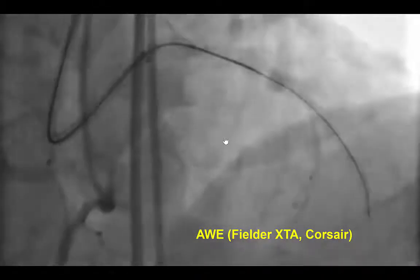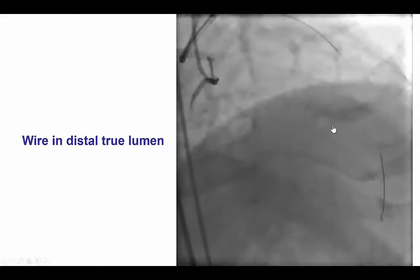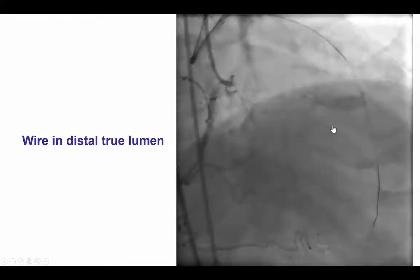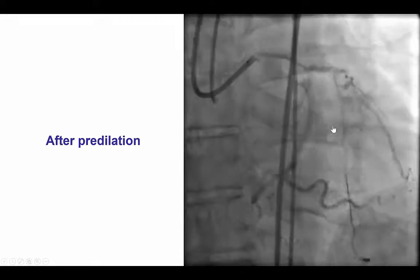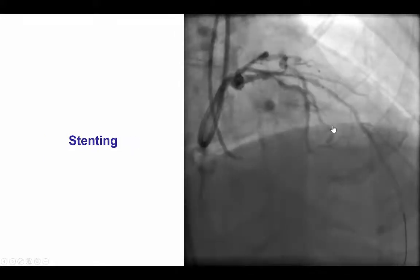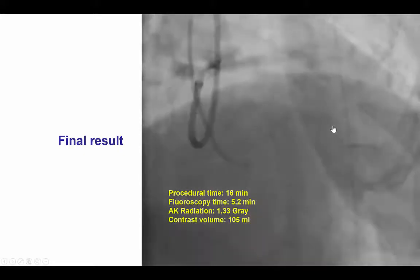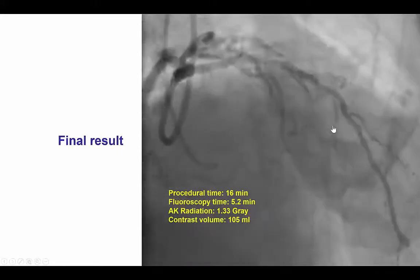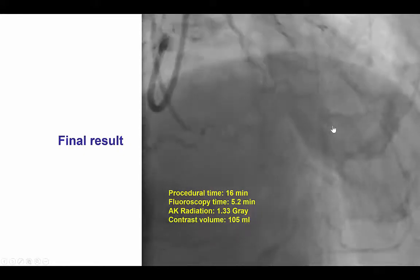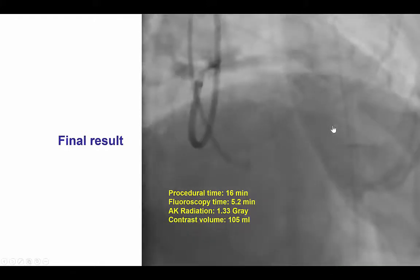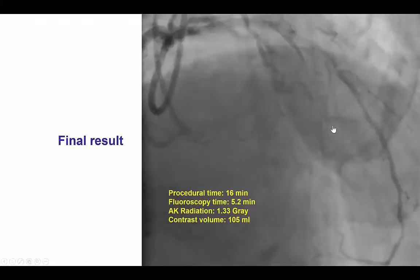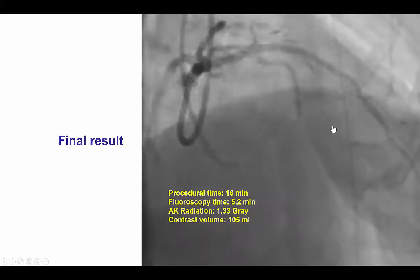We advanced a Fielder XTA guidewire, which easily crossed from the proximal cap into the distal true lumen, as confirmed by a contralateral injection in orthogonal projection. That was a very easy and quick crossing. The lesion was predilated, restoring antegrade flow, and was successfully treated with a single drug-eluting stent. The final result shows excellent TIMI 3 flow, achieved within 16 minutes of total procedure time, 5.2 minutes of fluoroscopy, 1.3 gray of radiation, and 105 mL of contrast.